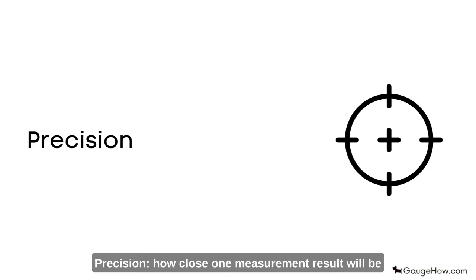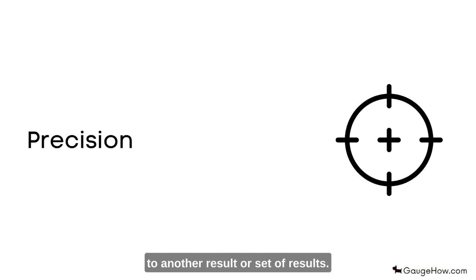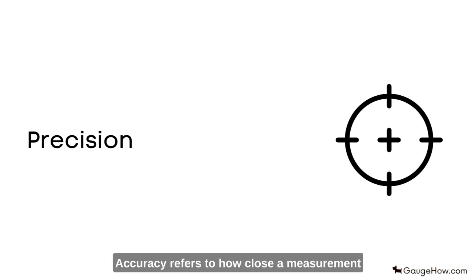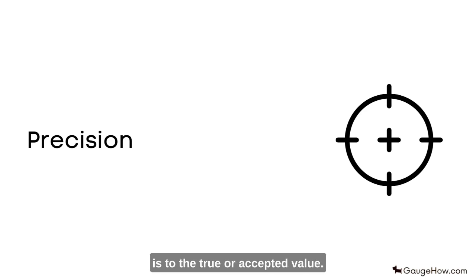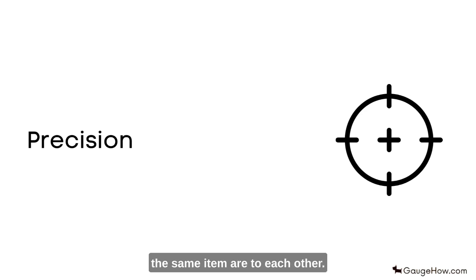Precision: How close one measurement result will be to another result or set of results. Precision should not be mistaken for accuracy. Accuracy refers to how close a measurement is to the true or accepted value, while precision refers to how close measurements of the same item are to each other.